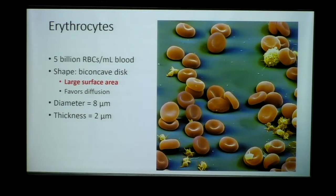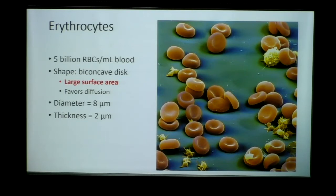Looking at red blood cells, we have about 5 billion red blood cells per milliliter of blood. Red blood cells have a unique biconcave disc-like shape — a dimpling on either side — and this is really important. The terms erythrocyte and red blood cell are interchangeable, as are leukocyte and white blood cell — you may see either on a test.